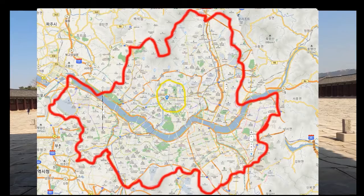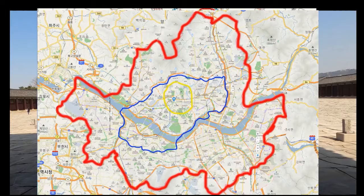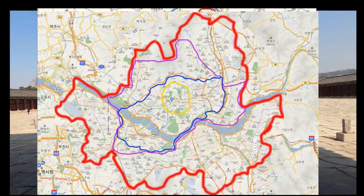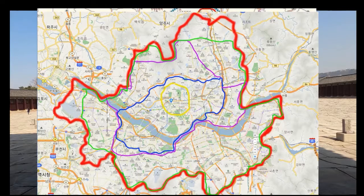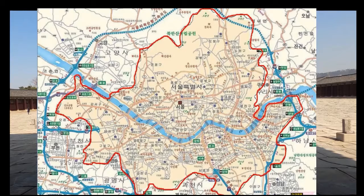From now on, let's look at the history of the Seoul map through the map. First, the yellow area is Hanyang, and the blue area on the screen is Jiangseng in 1937. This is the situation during the Japanese colonial era. The purple area on the screen is Seoul in 1960, and the yellow-green area is Seoul in 1966. Almost similar to the current map. And when Gimpo Airport was incorporated into the Seoul area, the current appearance of Seoul was completed.